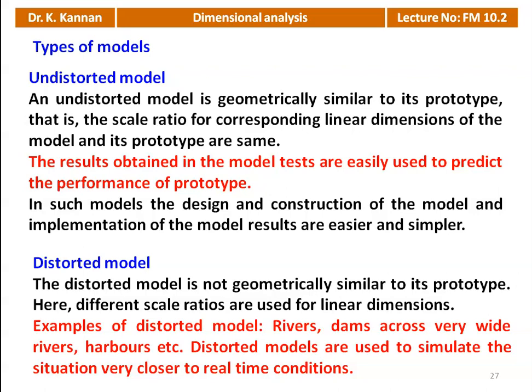Distorted models are not geometrically similar to their prototype; different scale ratios are used for linear dimensions. Examples include rivers, dams across very wide rivers, and harbors. Distorted models simulate situations closer to real-time conditions. For example, a long dam has a very long length but small height, so we cannot use the same scale ratio for both length and height — hence it is called a distorted model.